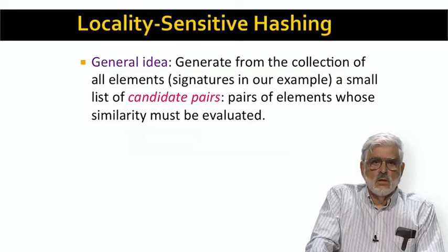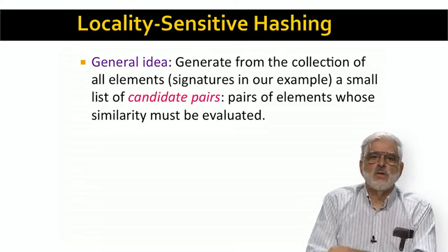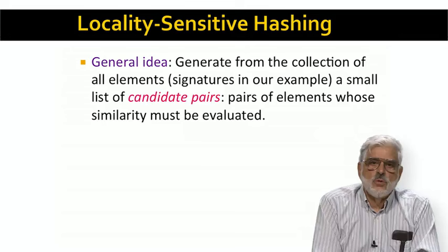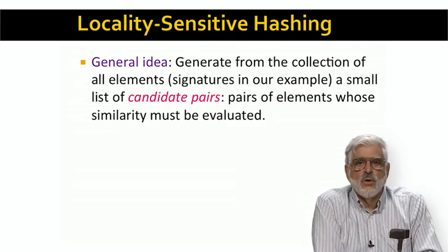The idea behind LSH is to look at a collection of elements — signatures in our example — and without constructing all pairs, create a short list of candidate pairs whose similarity must actually be measured. When constructing candidate pairs, we look only at individual elements, not at the pairs themselves. All pairs that are not candidates are assumed not to be similar, even though in rare cases there will be false negatives — pairs that are similar but never checked.